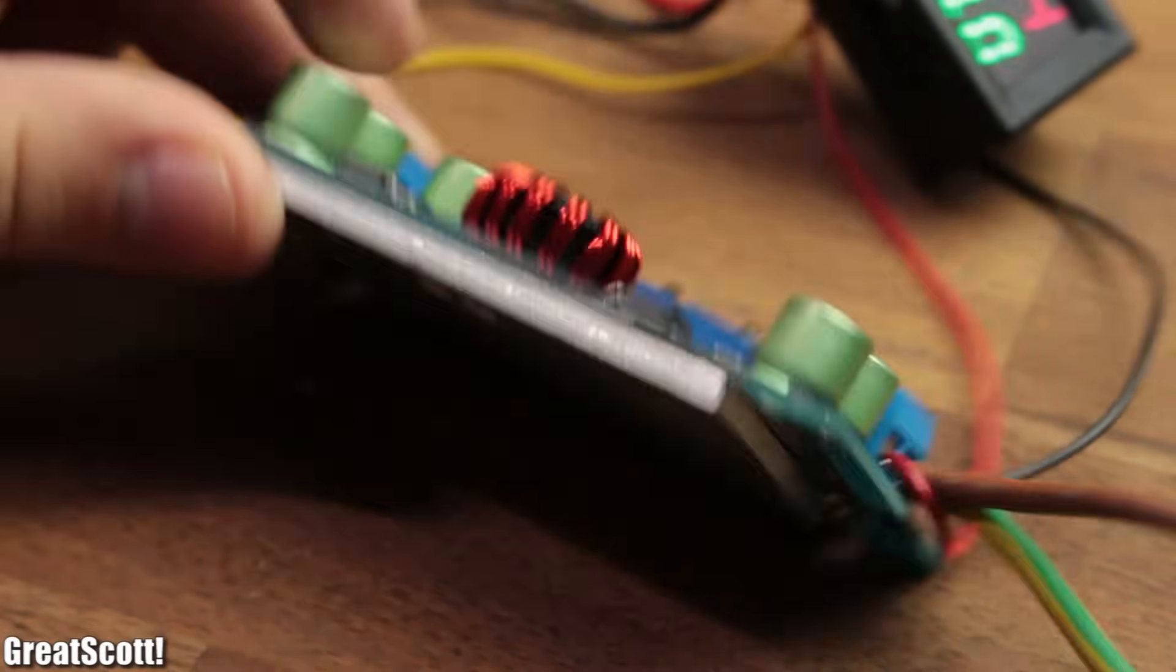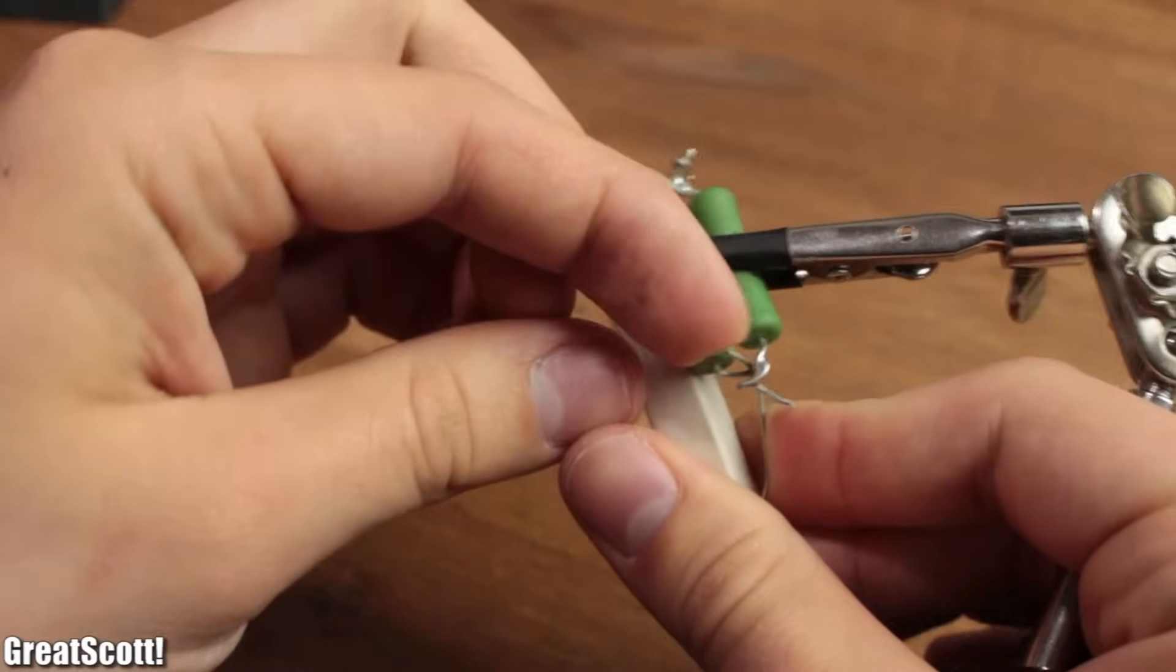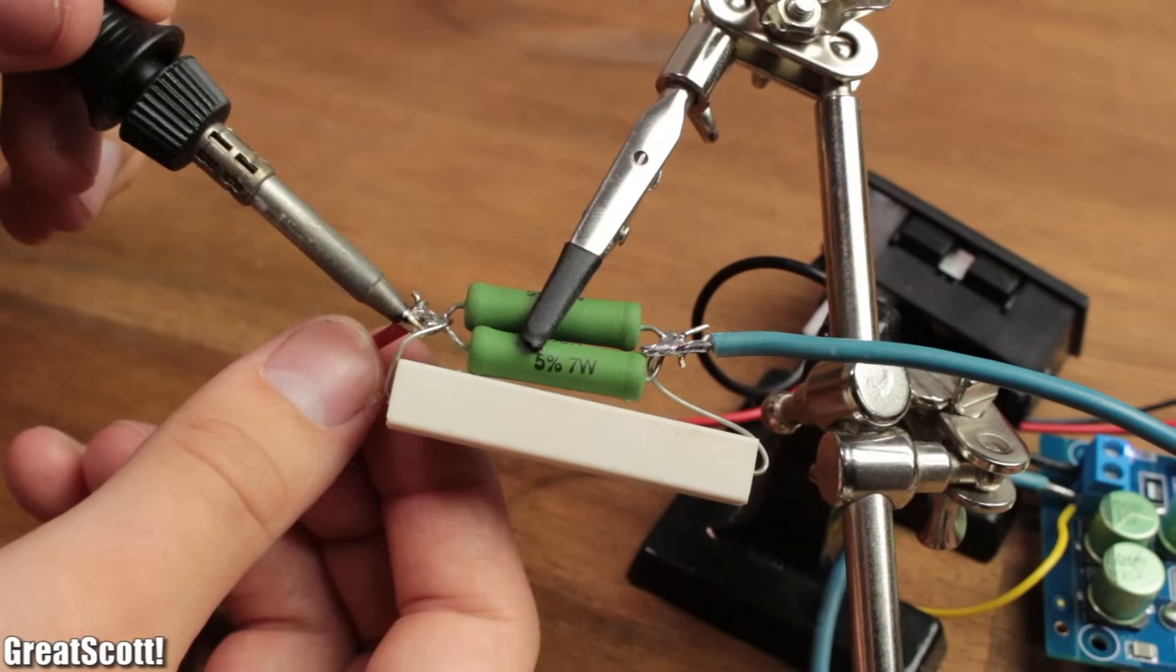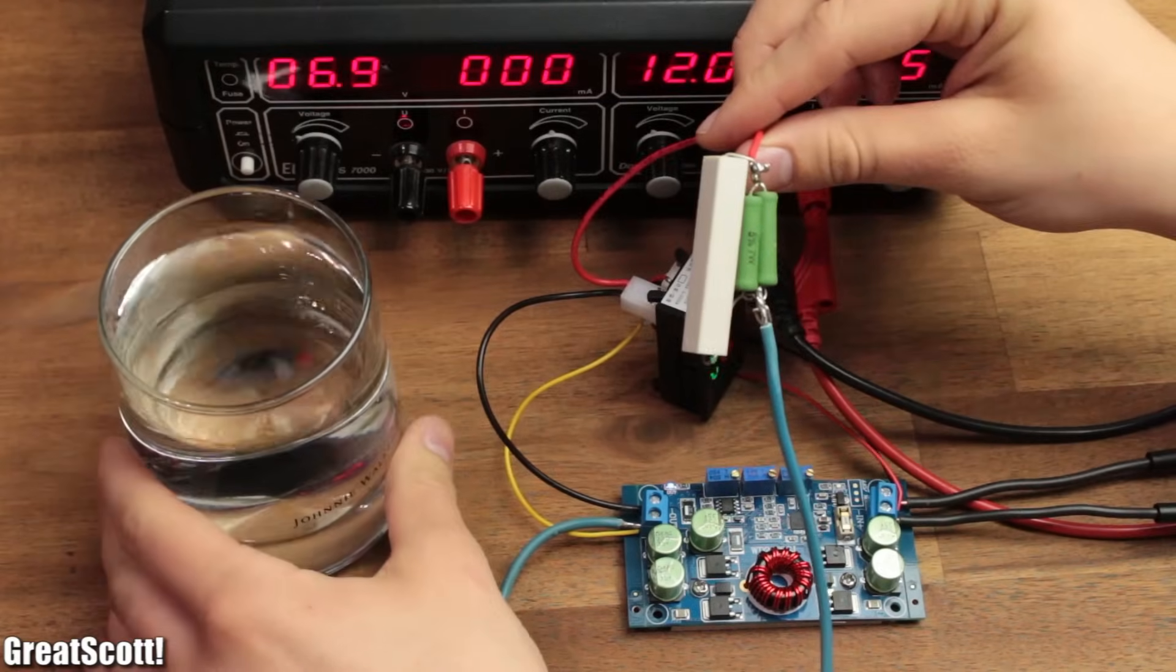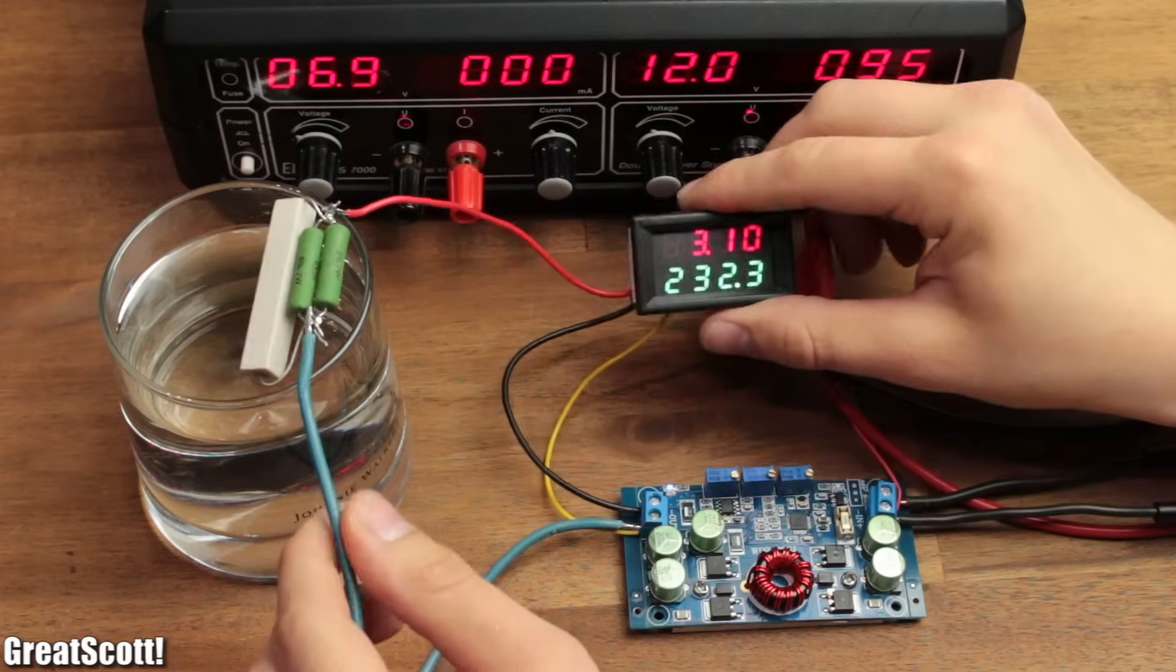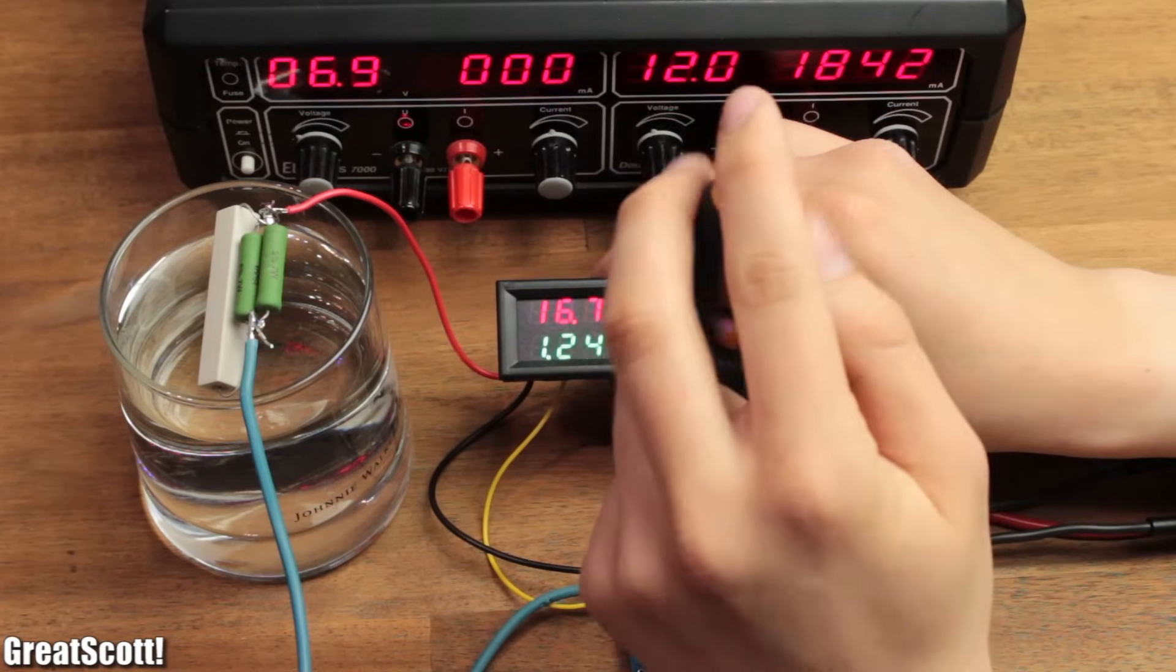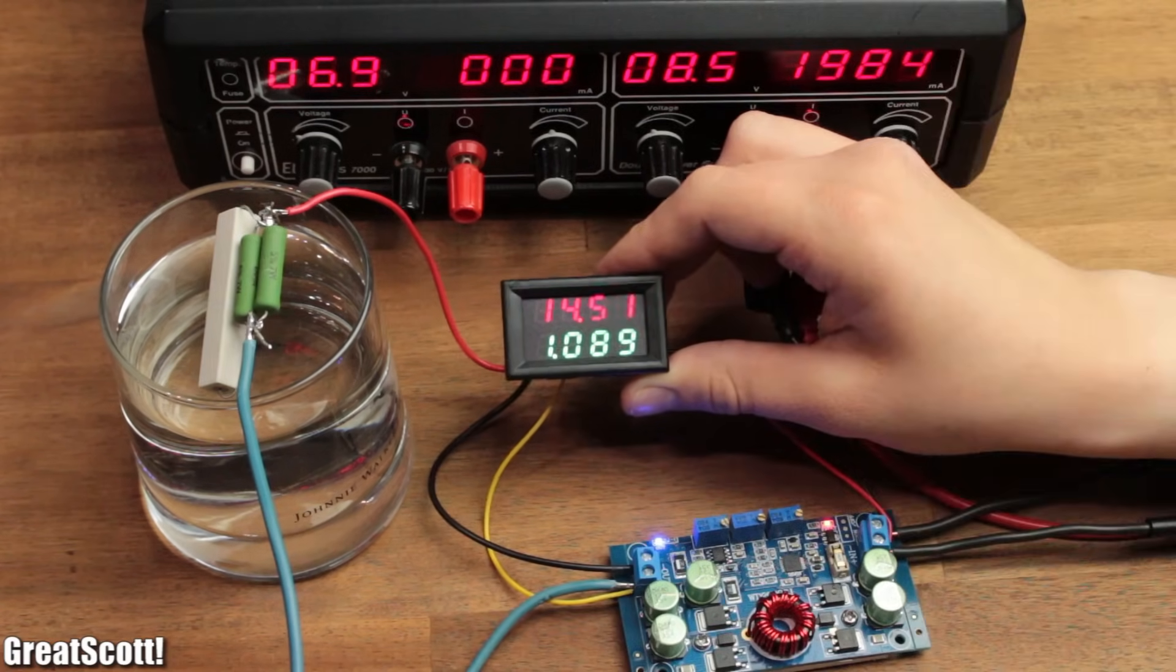Now let's find out whether the built-on heatsink is enough for our project. I created this Frankenstein power resistor and soldered it to my output. If you are asking yourself right now, why am I placing the resistor on top of a glass of water, then just wait a second. I cranked up the voltage and shortly reached the maximum of my bench power supply. This means we need more power.